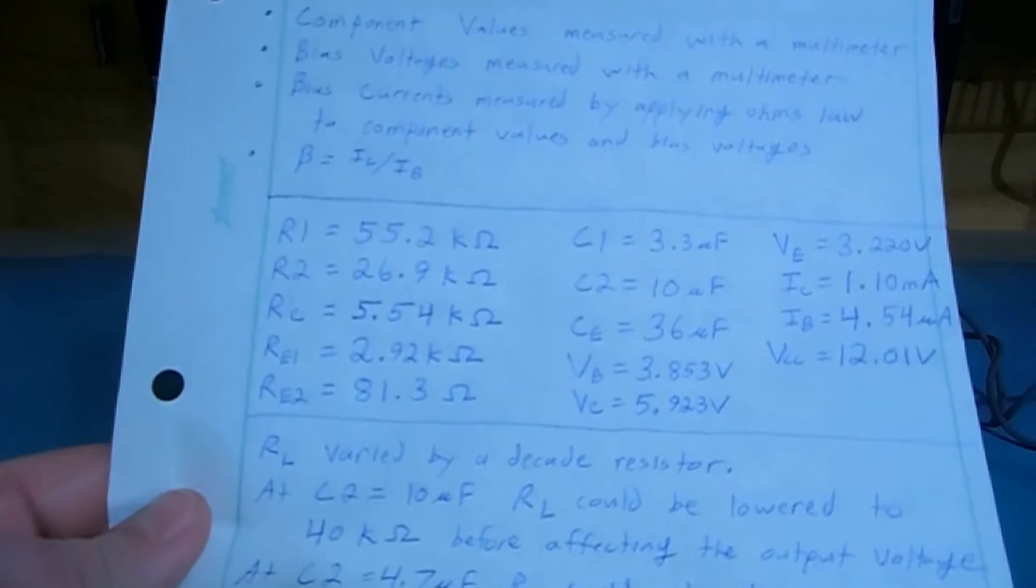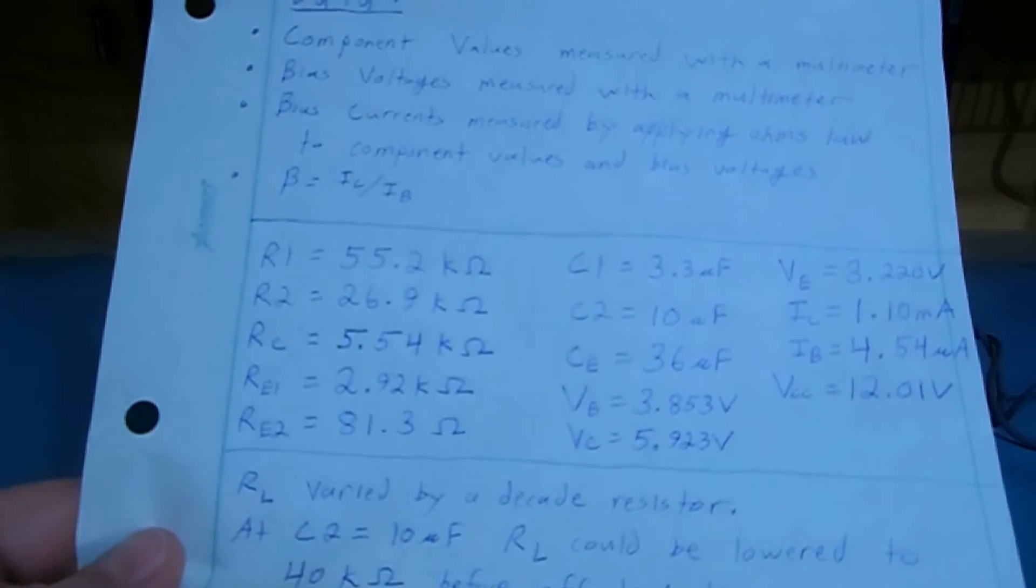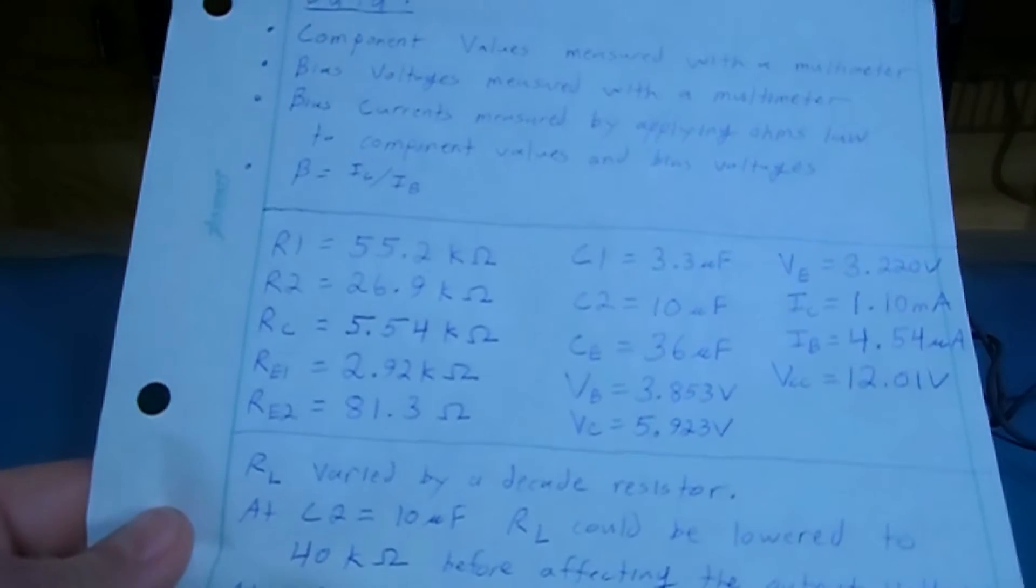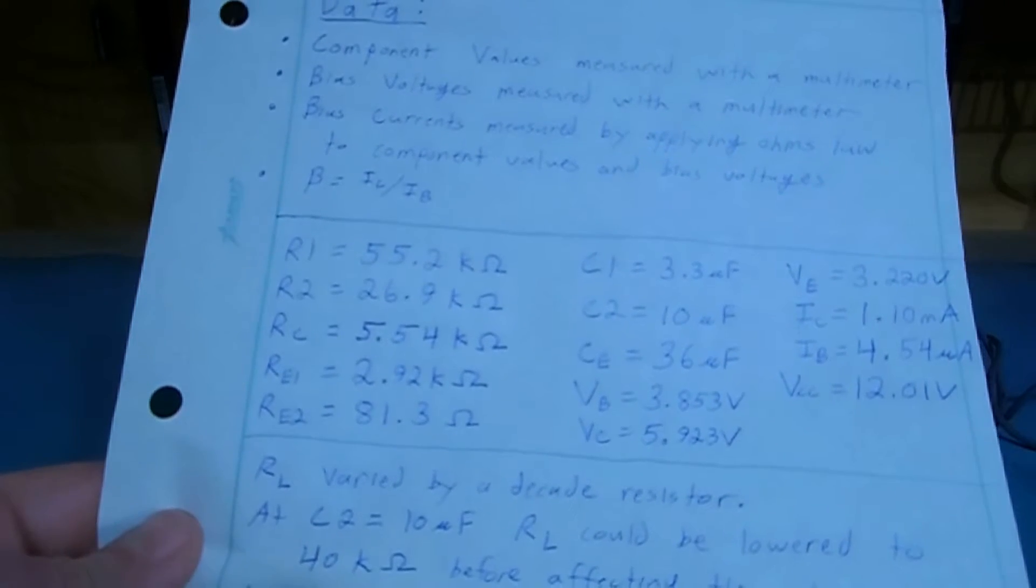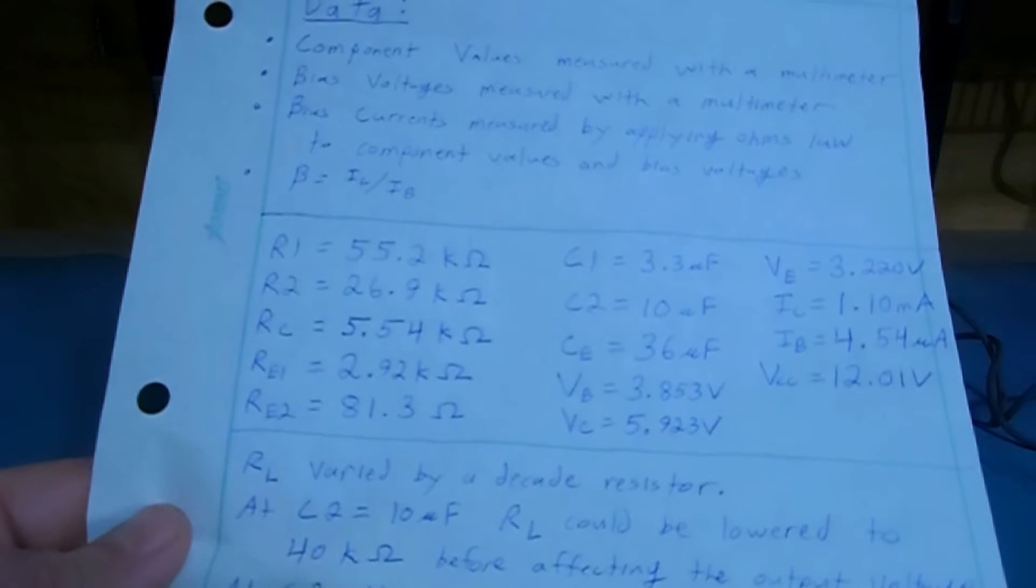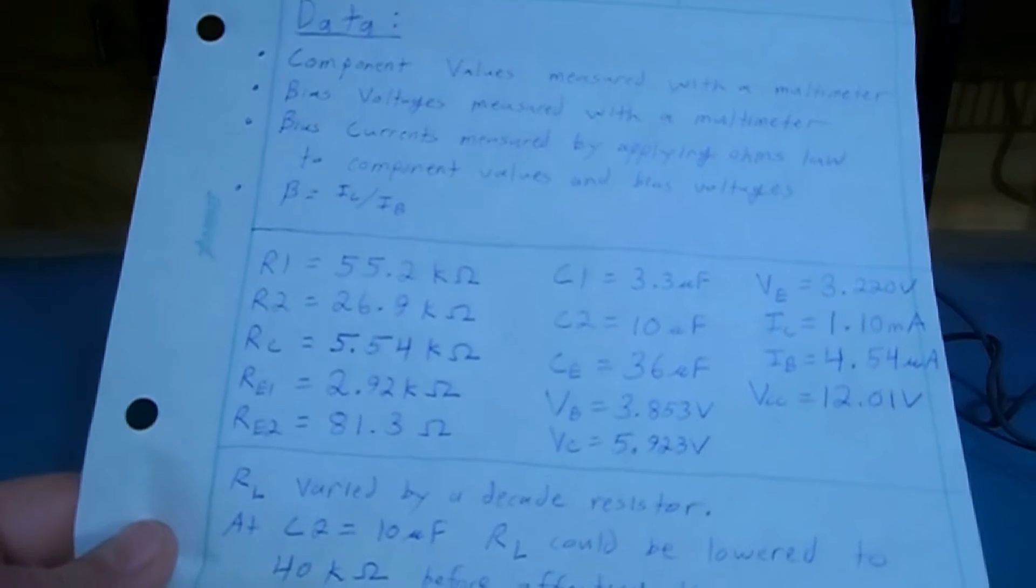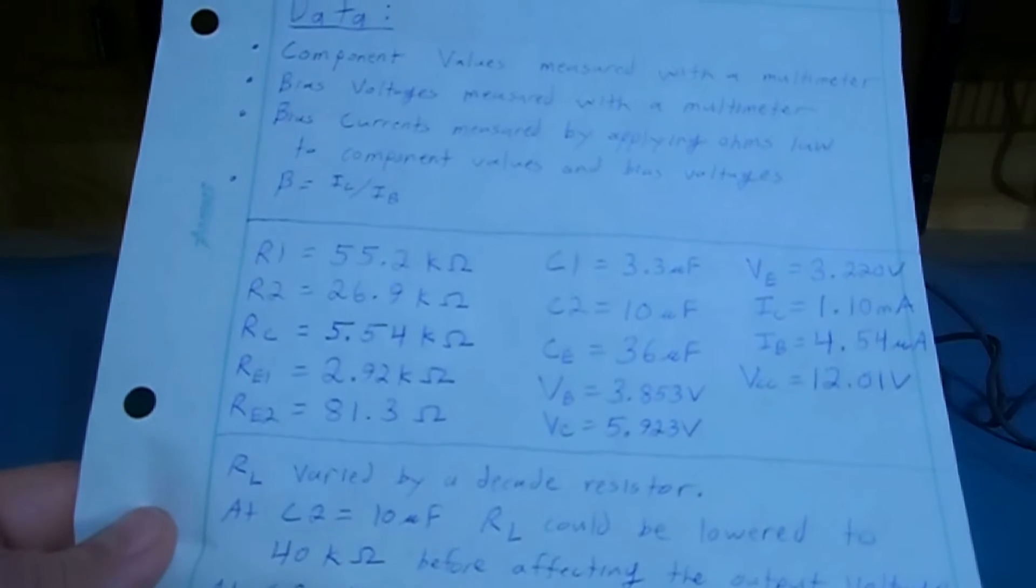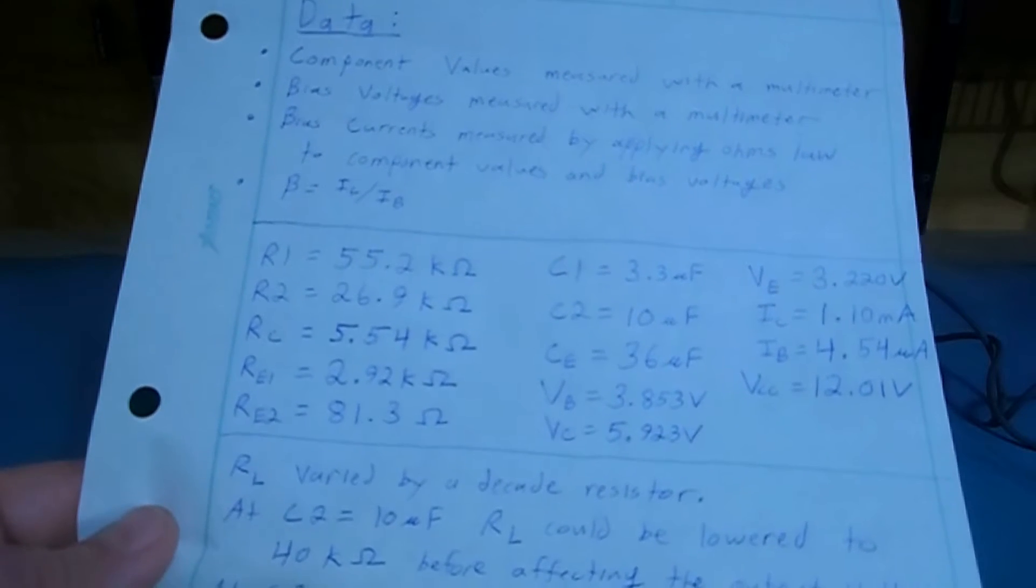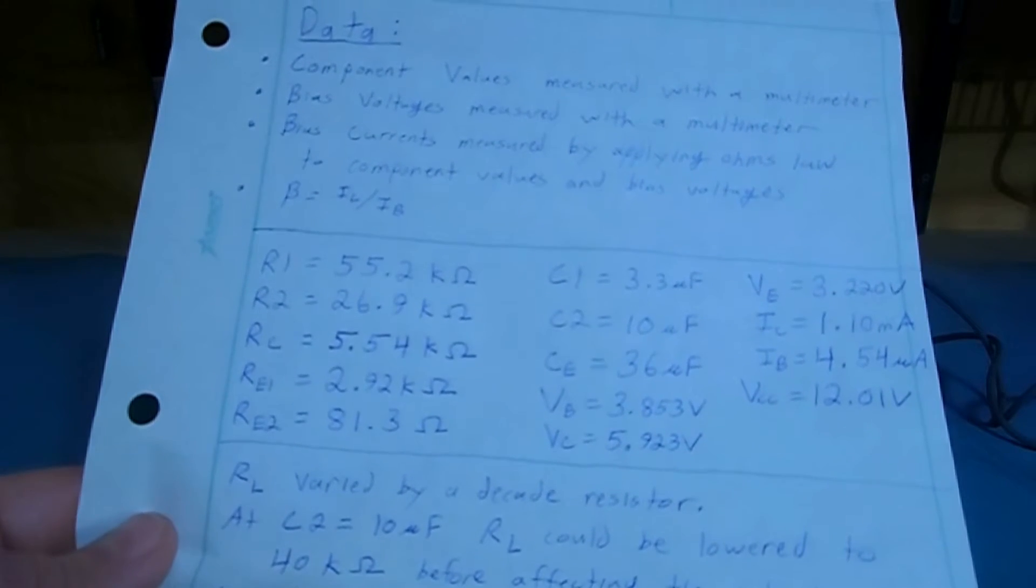Now, after choosing the parts out of my parts bin, you'll see that almost all the values are pretty much spot-on to where they're supposed to be for component values. And then also, after building the circuit, I measured VB, VC, and VE, and they are all very close to where they're supposed to be.